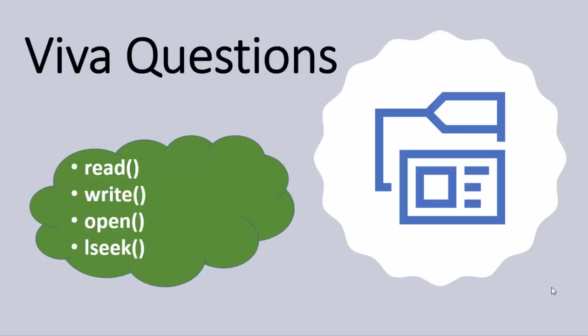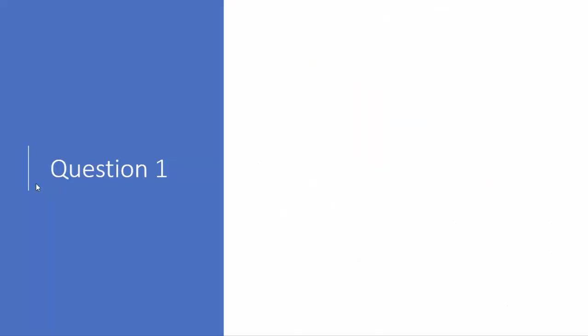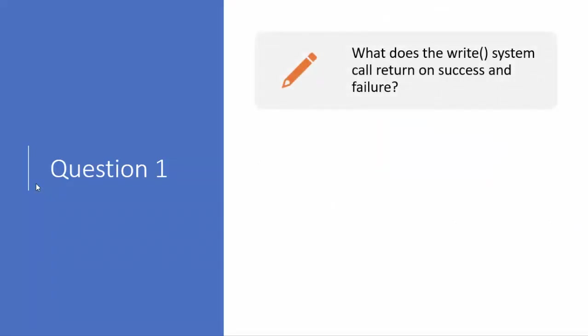Hello everyone. In this lecture we are going to cover viva questions based upon the basic system calls like read, write, open, and lseek. The first question is: what does the write system call return on success and failure?